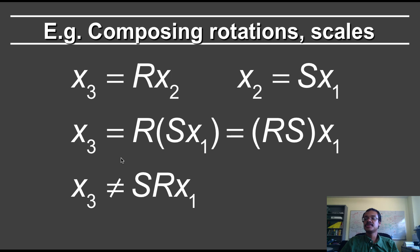What is x3 equal to? It's just equal to the rotation applied to x2, which is Sx1. Since matrix multiplication is associative, this is equal to the rotation times the scale times x1. So you have a net matrix, which is rotation times scale.